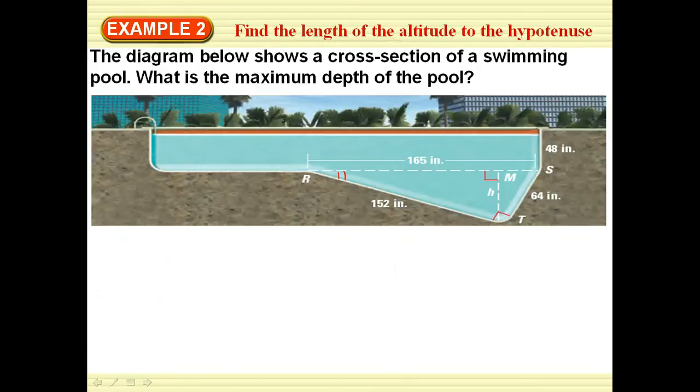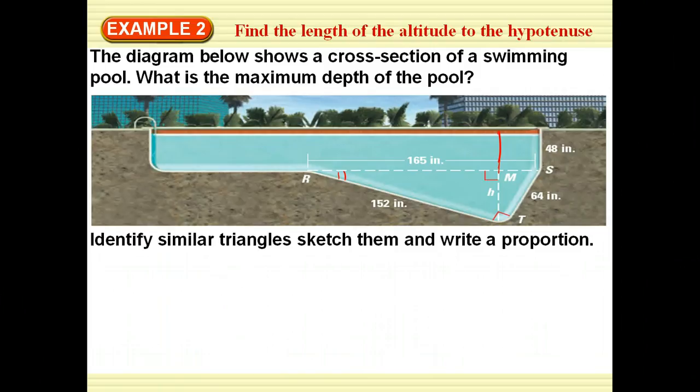So how will we use this? Find the length of the altitude to the hypotenuse. Here this will help us get the entire depth of this swimming pool. First thing I'm going to do is set me up two similar triangles. I'm going to sketch them, draw a proportion, and solve the problem.